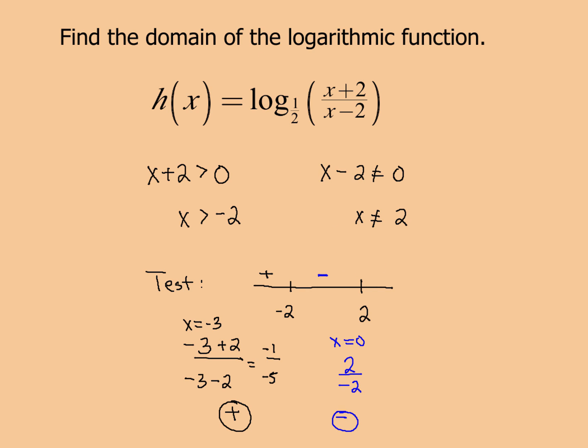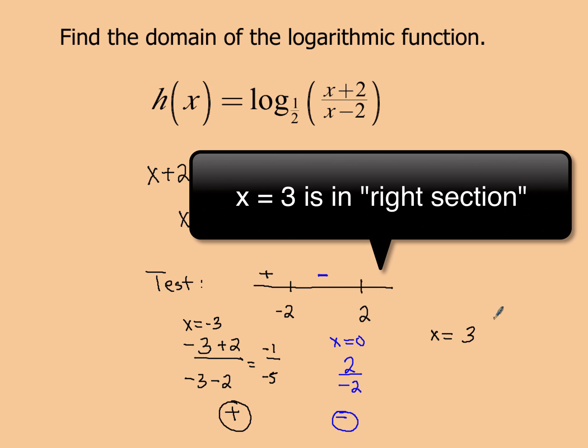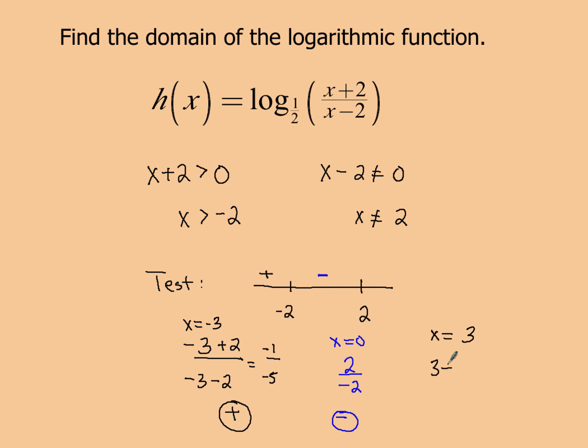And then lastly, we'll go ahead and we'll pick a value greater than 2. So we're going to look at our third region here, and this time I'm going to say let x equal 3. You can pick any number you want greater than 2. Now again, if I put in 3 for x, I'll have 3 plus 2 over 3 minus 2. I don't really care about the value so much as I do the sign. So 3 plus 2, that's positive. 3 minus 2, that's positive. So at the end, this component right here, that piece is going to be positive.